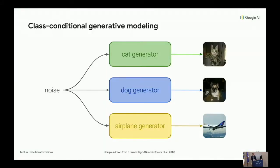Before I jump in with the definitions, let's think about some use cases. One example I like to give is class conditional generative modeling. The best image generation models today are class conditional — there's a distinct generation pipeline for each class in the dataset. So if we have three classes — cat, dog, and airplane — we train separate generators: one for cats trained exclusively on cat images, one for dogs, and so on.